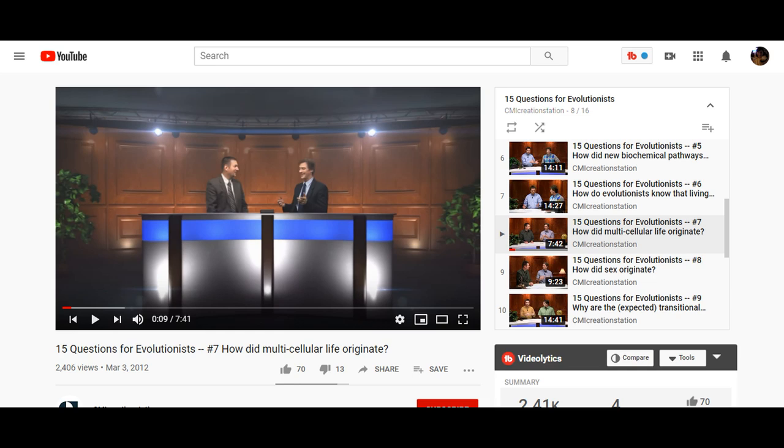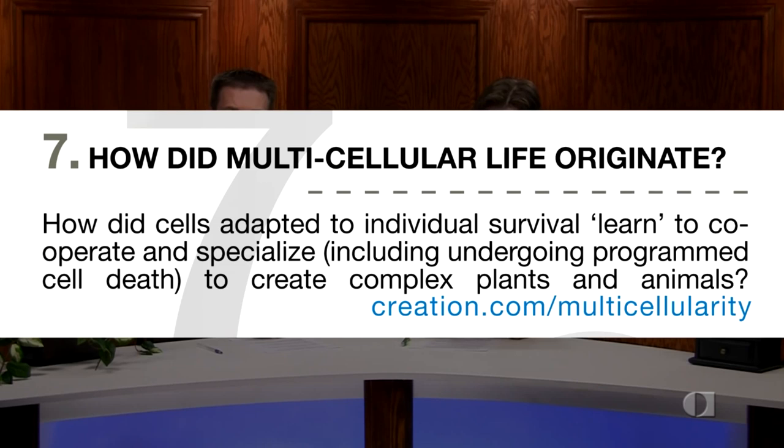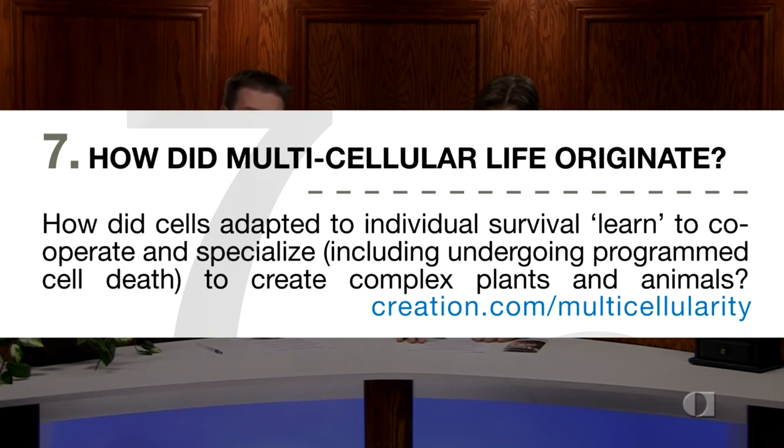So we're continuing today on our 'Question Evolution Campaign' flyer, 15 questions for evolutionists, and today we're going to do question number seven: how did multicellular life originate? Just going to read out of the pamphlet here: 'How did cells adapted to individual survival learn to cooperate and specialize, including undergoing programmed cell death, to create complex plants and animals?' We've got an article on our website at creation.com/multicellularity that goes into detail on the real problems and issues here. This is a big question for evolutionists.